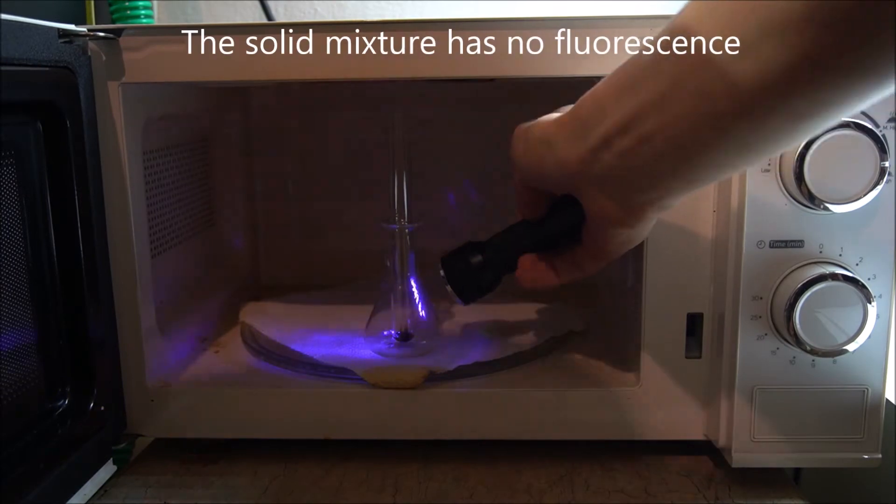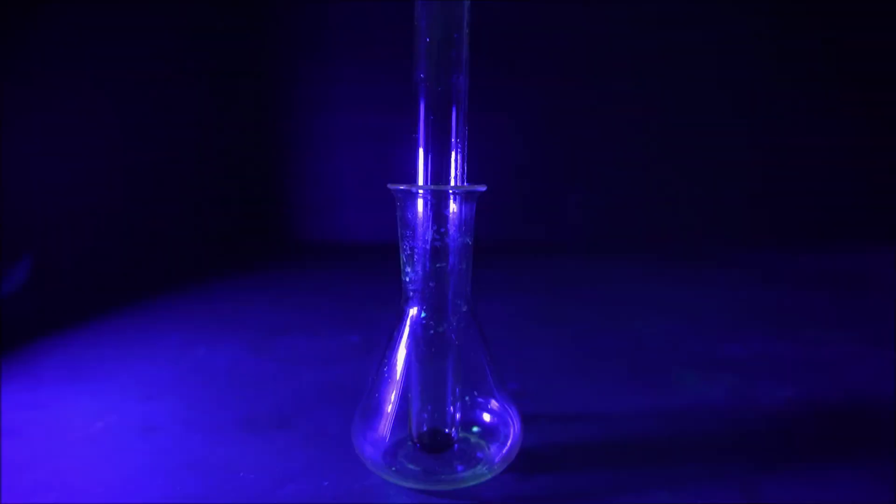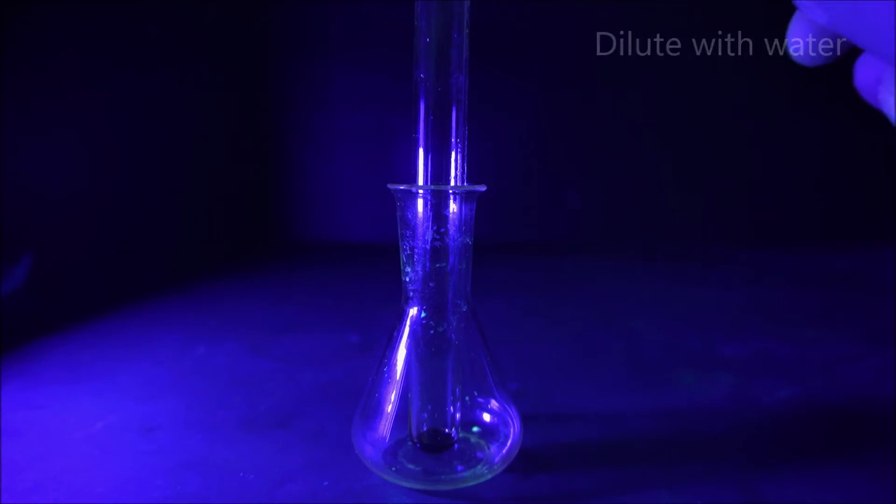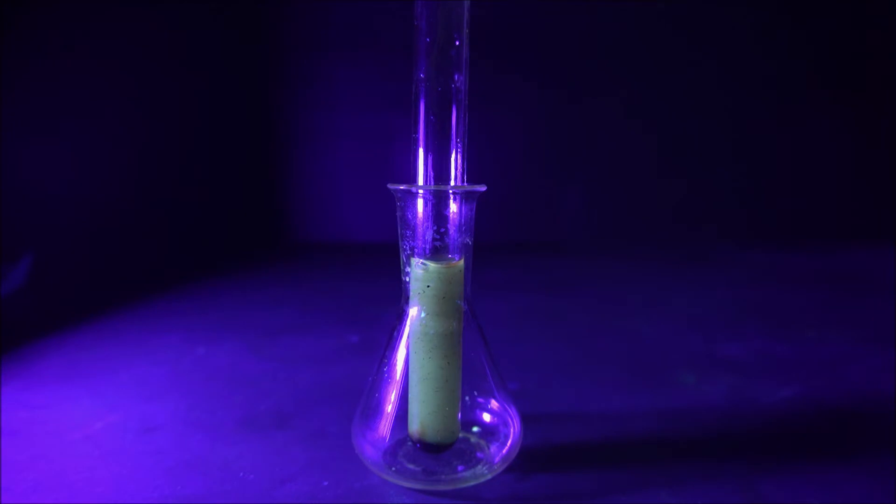The solid reaction mixture doesn't have any visible fluorescence. Add about 10 milliliters of deionized water to the test tube. The fluorescence appears to be yellow or green depending on the angle of illumination.